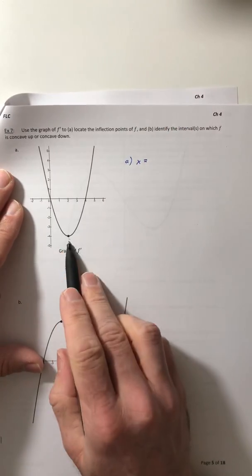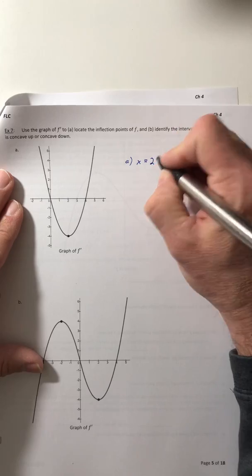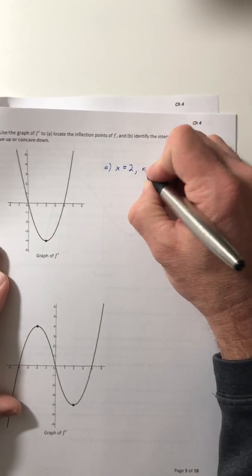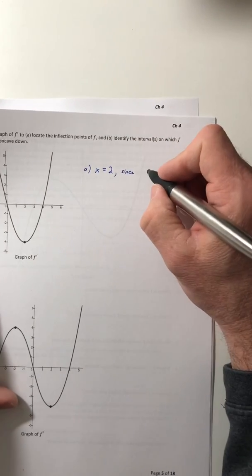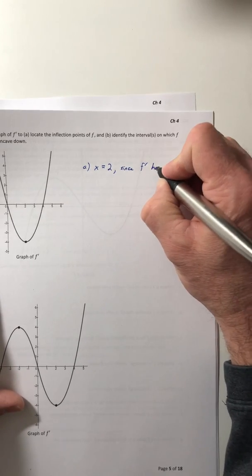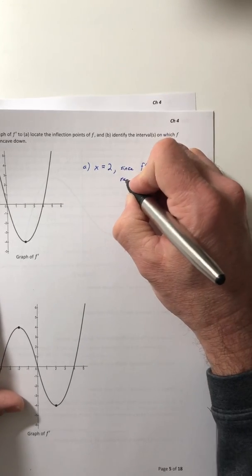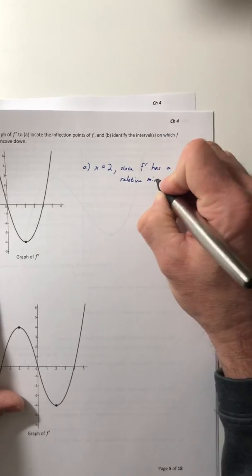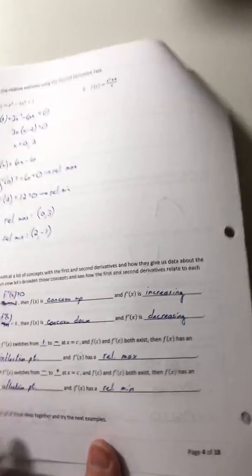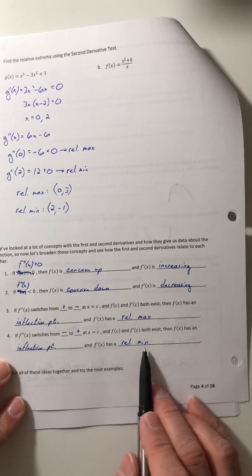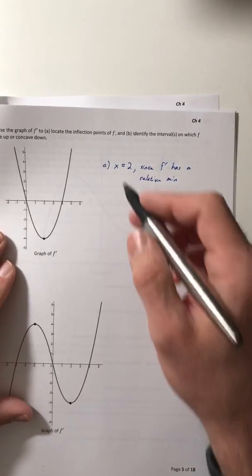Right when x is equal to 2, you have an inflection point. In your justification you say: since F prime has a relative min. Because if the derivative has relative extrema, then you've got an inflection point for the graph of the function. And that's the only relative extrema, so that's the only inflection point.